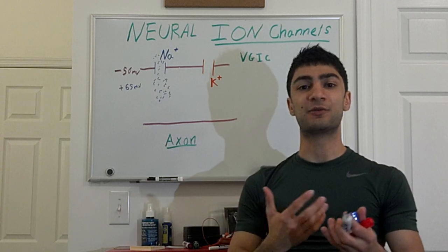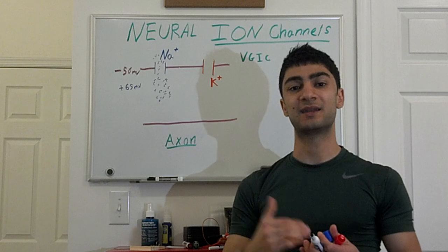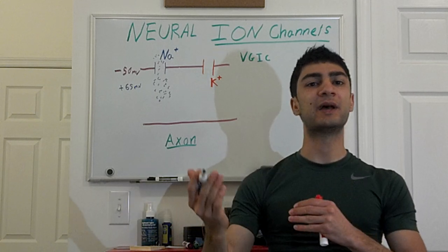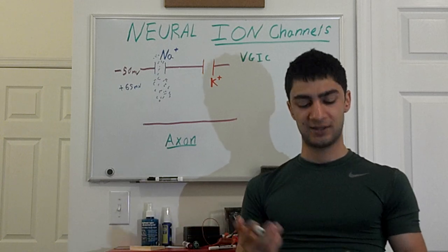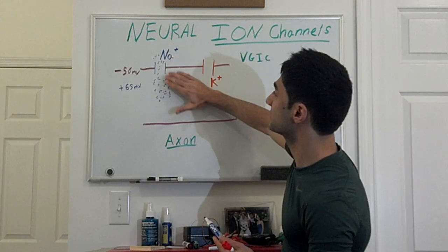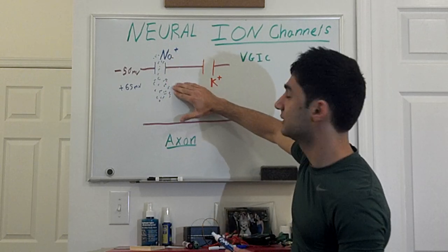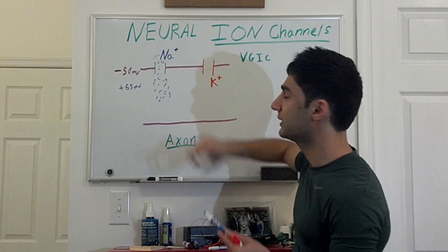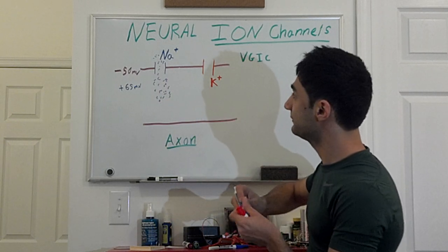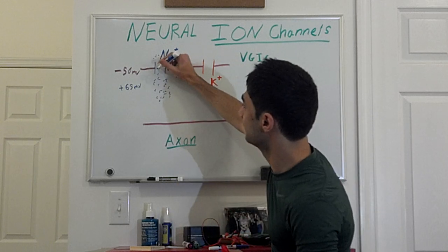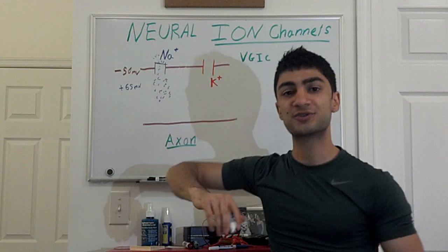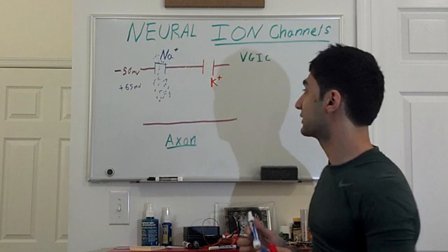Depolarization means there is no difference in charge between inside and outside the cell membrane. When something is polarized, it means it has two ends or two different charges. Sodium is flooding through the cell, flowing in at a constant rate, and the sodium channels are still open. Now after a little while, the sodium channels are going to close up — no more sodium is going to come in.